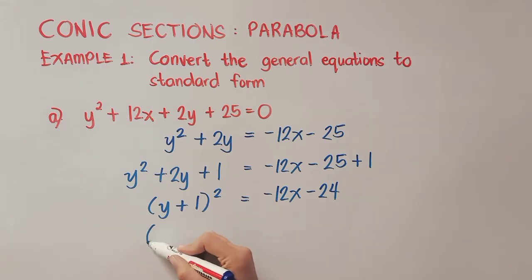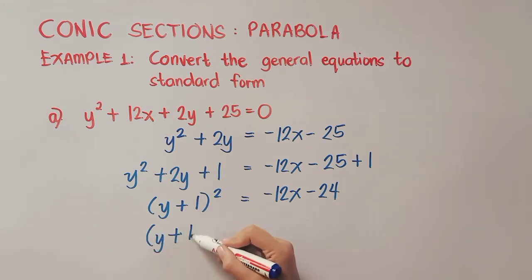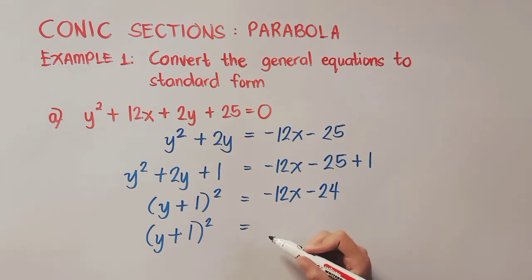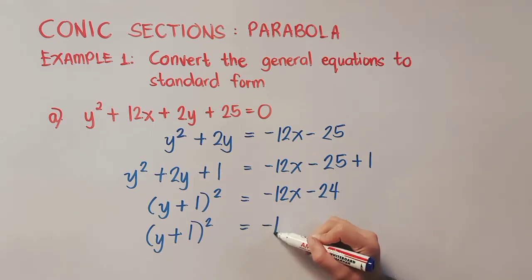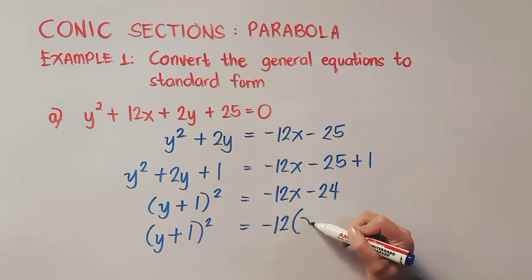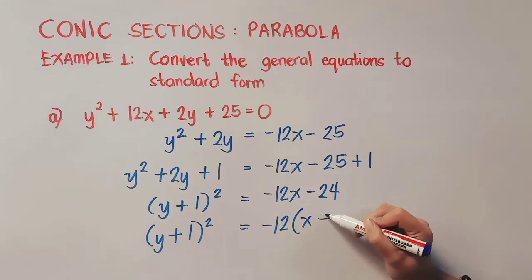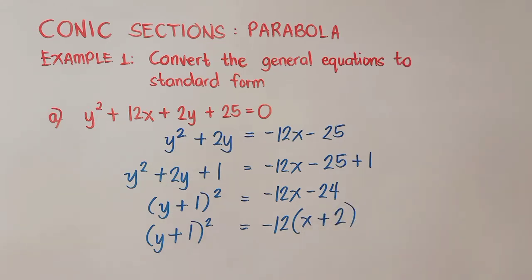As you can see, there is still a common number on our right side, so we will factor it out. We have negative 12, so we will be left with x, and then negative 24 divided by negative 12 is positive 2. And this is our final answer.